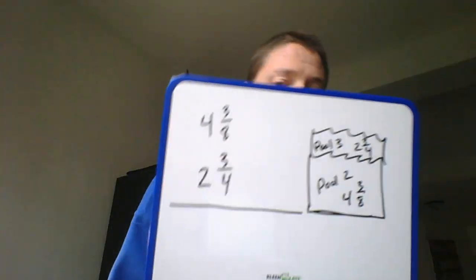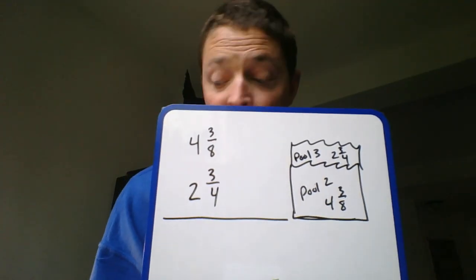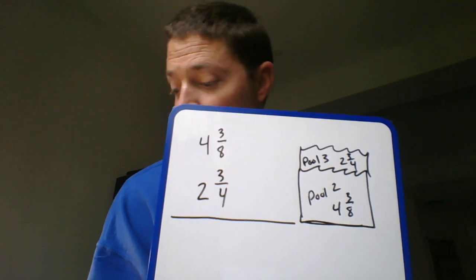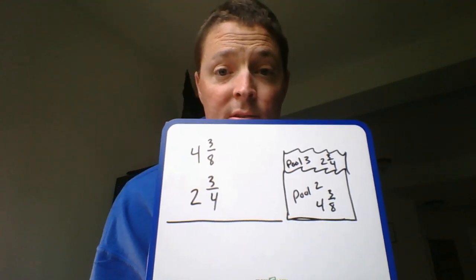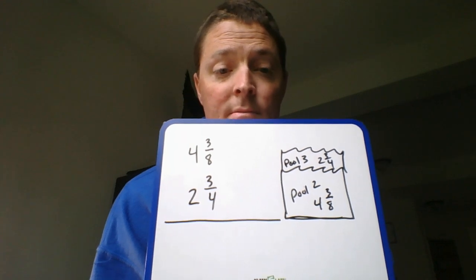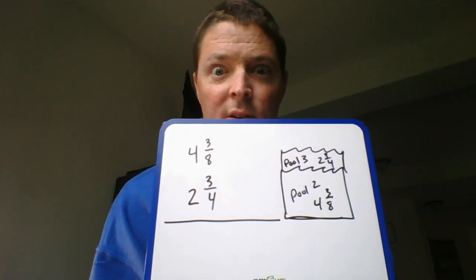Now, if we want to find the total depth, which is what they're asking, what do you think that we should do with those two fractions or two mixed numbers? Add? I think that's a good idea. Let's try it.